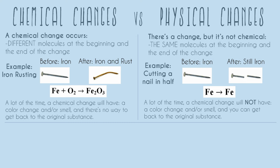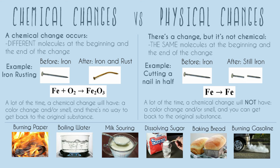Now I'm going to do a bunch of practice problems that you'll probably do in your class. Let's go over six different typical examples and answer: are they going to be chemical or are they going to be physical? Starting on the left, we have burning paper. Any type of burning is going to be chemical.